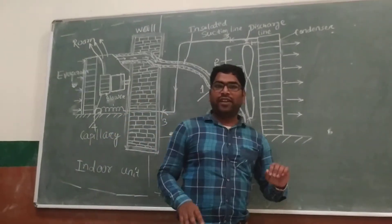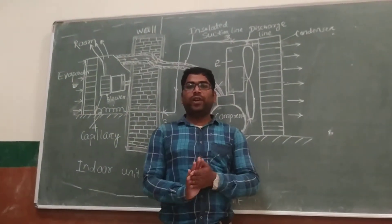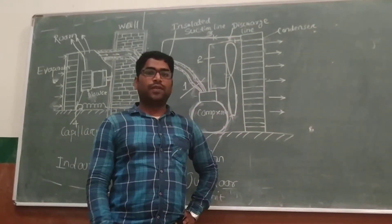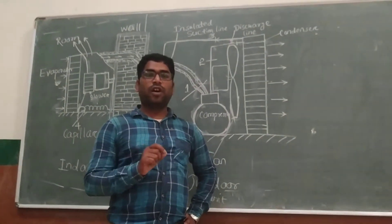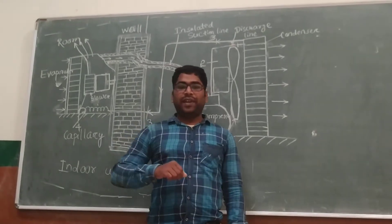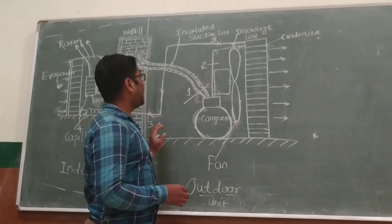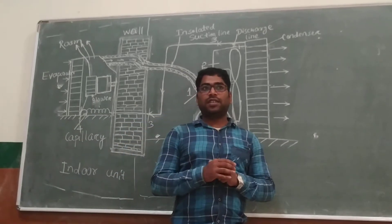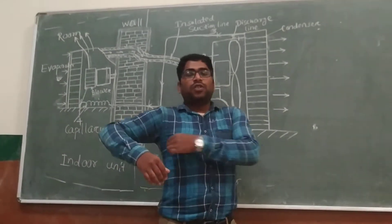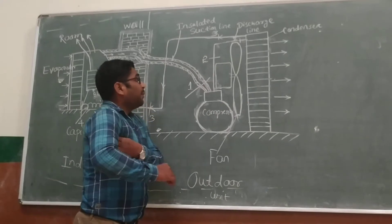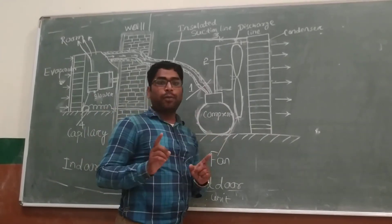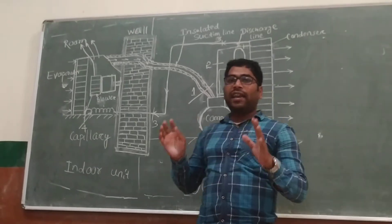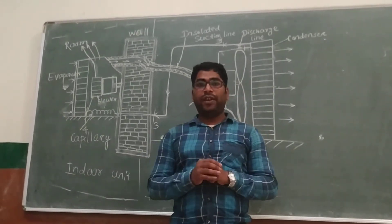Today we are going to study the constructional features of a split air conditioning system, or split AC. Before going to split AC, we all know what a window air conditioning system or window AC is. In a window AC, the condenser, evaporator, compressor and all components are kept in one unit.